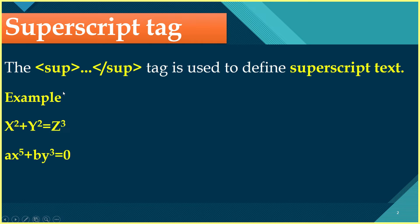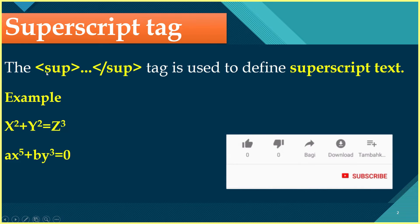For example: x square plus y square equal to z cube, and ax to the power 5 plus by to the power 3 is equal to 0. If you want to write this equation in an HTML page, then you want to use superscript. If you wish to raise a power to a variable, you want to use superscript. Here you can see x to the power 2 — this 2 can be written in HTML by using the superscript tag, and y square can also be written in HTML by using the superscript tag.